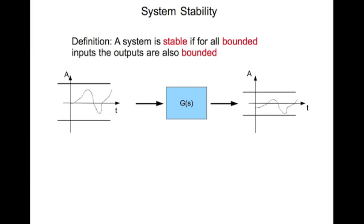Here's an illustration. You have a system G(s) and this is the input signal. For all times, the amplitude of the signal remains within these bounds. If the system is stable and you give this input to the system, it's going to give you an output which is again going to be bounded — this signal will never cross these two bounds. Essentially, the system doesn't blow up.